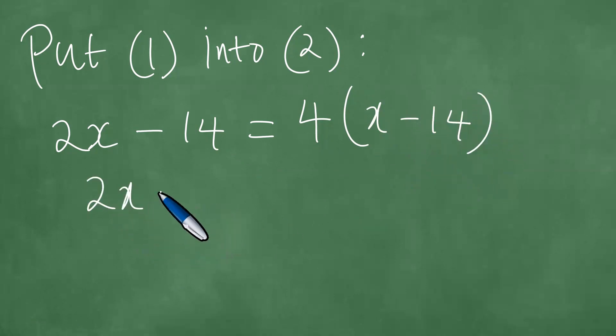This is therefore 2x minus 14 equals 4x minus 56. If you bring 56 to the other side, it becomes 56 minus 14, which is 42. Now we have 4x minus 2x, which is 2x. So this is therefore 2x equals 42, which means x is 21.